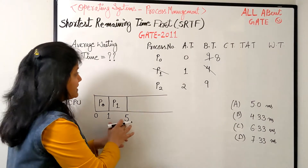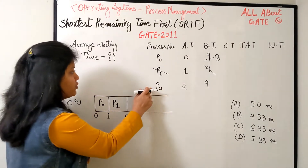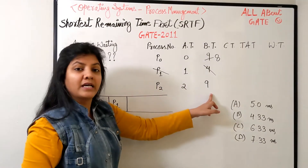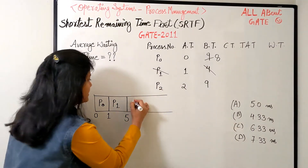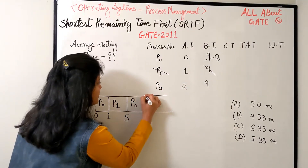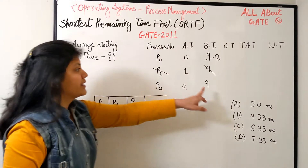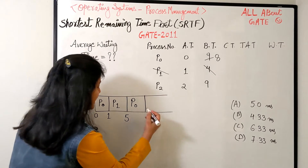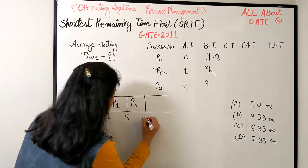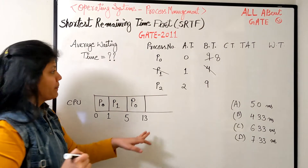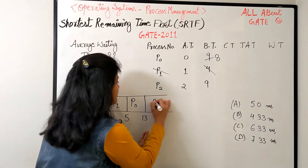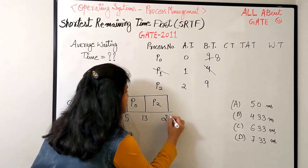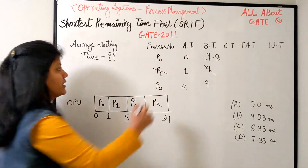By time five we have P0 and P2, where P0 has eight remaining and P2 has nine. Quite obvious who gets scheduled - P0, which needs less than nine. Five plus eight is thirteen, so P0 finishes at thirteen. Next is P2: thirteen plus nine is twenty-one, and scheduling is done.